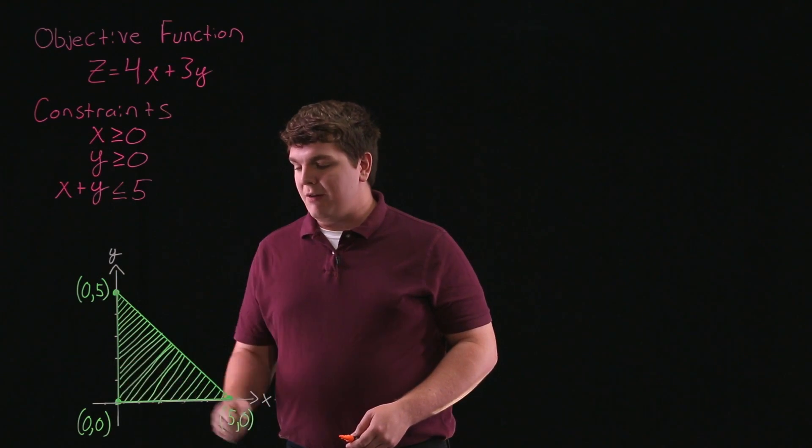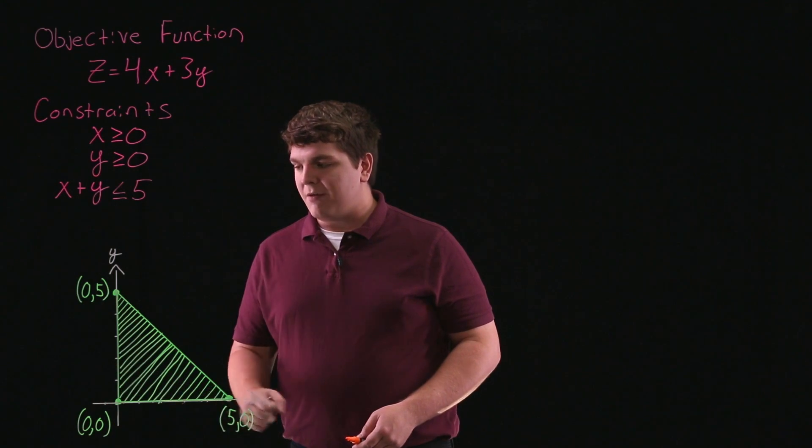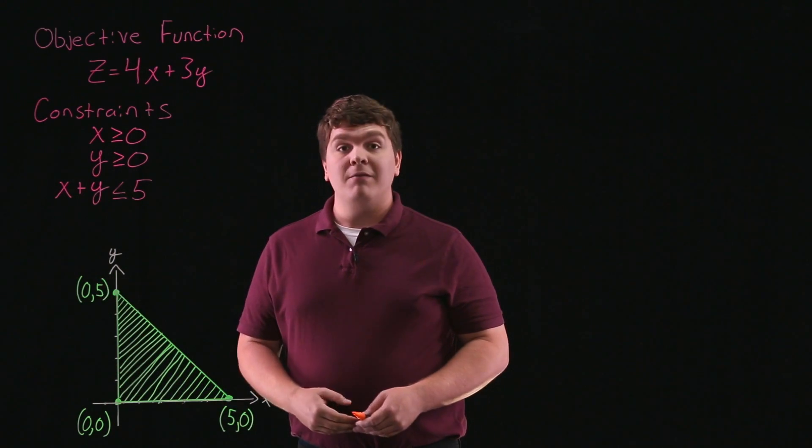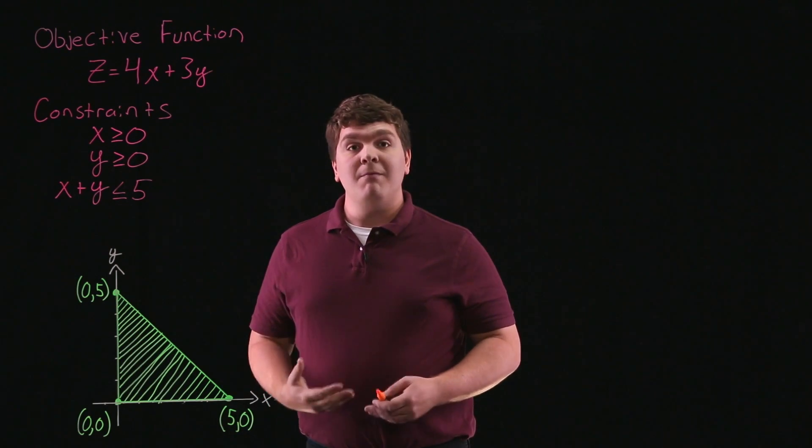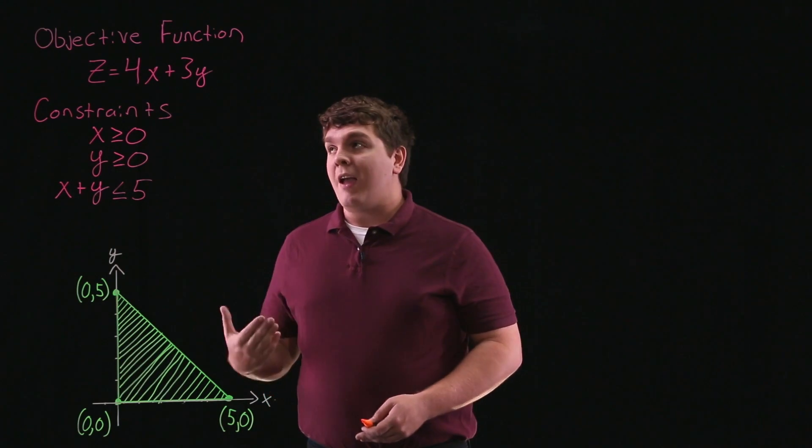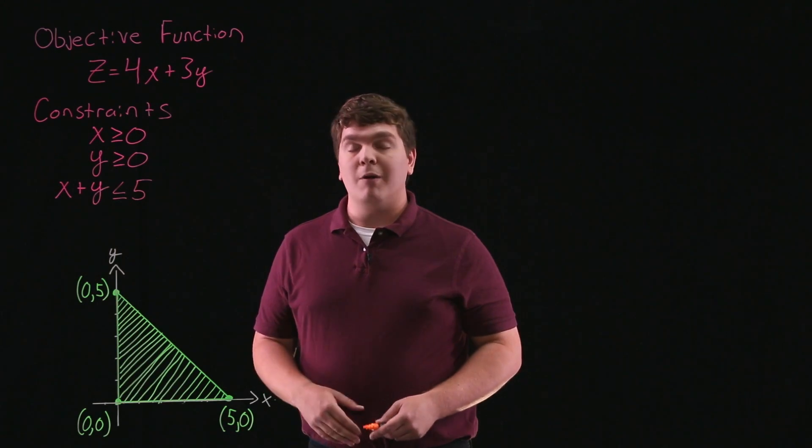So what we're going to do is take our three vertices: 0, 0; 5, 0; and 0, 5. We're going to substitute these into our objective function, and the maximum number that we obtain is going to be our maximum value, and the minimum number we obtain is going to be our minimum value.